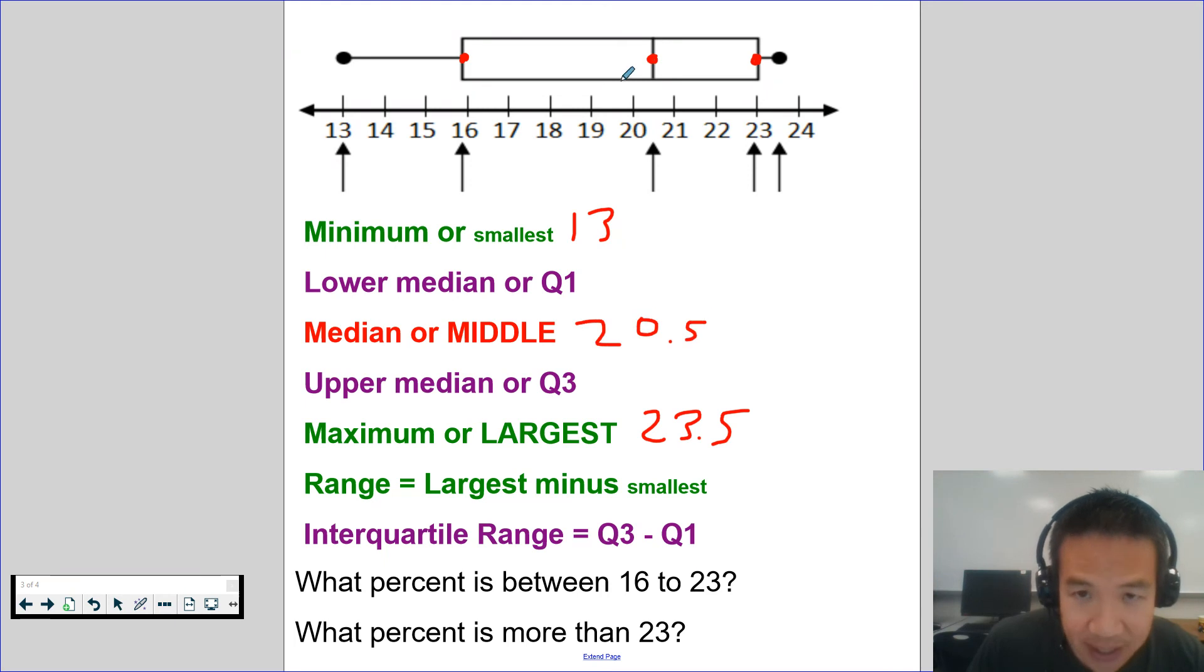So if this is the median right here, everything to the left of it is the lower half. What's the median of the lower half? 16. And if this is the median right here, everything to the right of it is the upper half. What's the median of the upper half? 23.